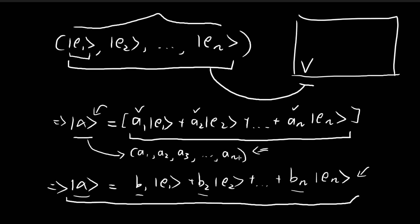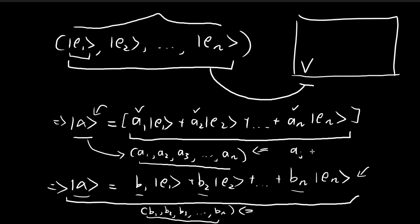Going back, we have n scalars that give us alpha, and we're assuming another set of scalars that also forms a linear combination equal to alpha. Since we're assuming this is a different set of scalars, some of them must differ. So let's say the jth scalar is different — aj is not equal to bj. There must exist some j where the corresponding scalars are different.